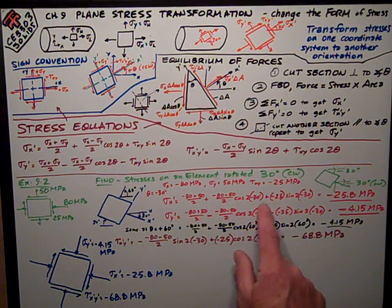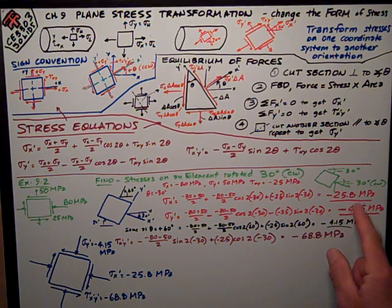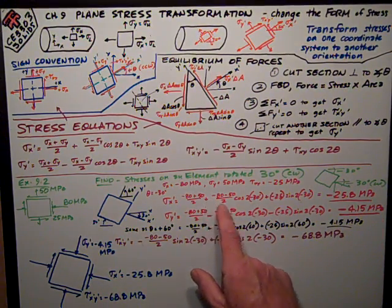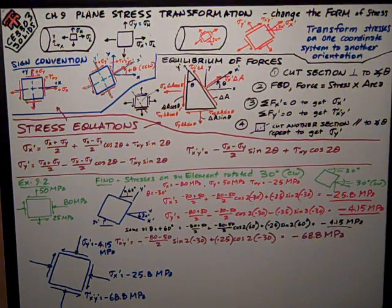And here I just plug and chug into the equations, and I get that sigma x prime is negative 25.8 megapascals. This does become very confusing. I've got all these negative signs and negative angles, and you've got to keep track of it and be careful.